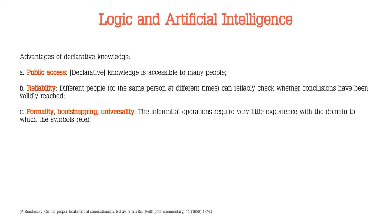This is not unusual. The development of a new language is quite common, for example between two different generations. Between parents and children, there is always a gap in language, because the young generation develops a sort of slang or simply the language evolves into something different. In this slide, we discuss the advantages of declarative knowledge. The author discusses three main points: A — public access, B — reliability, and C — formality, bootstrapping, and universality.